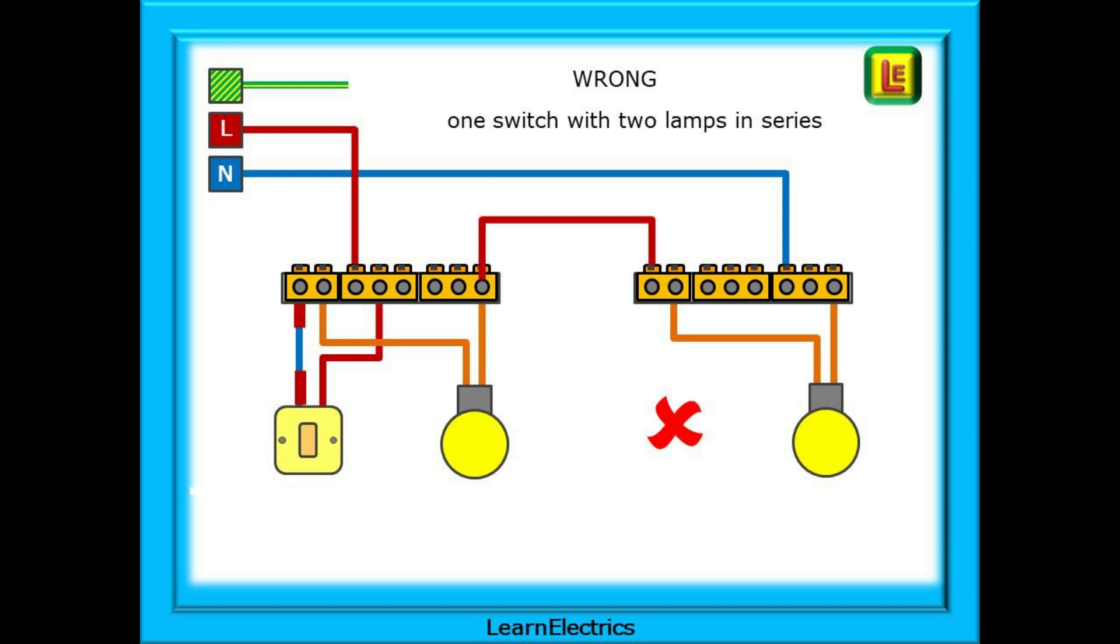Now, this is where it goes wrong. The first lamp is connected between the switch block and the neutral, but there is no neutral connection at the leftmost ceiling rose. Instead, there's a link to the switch block on the second ceiling rose, and then a neutral connection back to the consumer unit. This is now a series circuit. Two lamps in series across the 240 volts. Totally wrong.